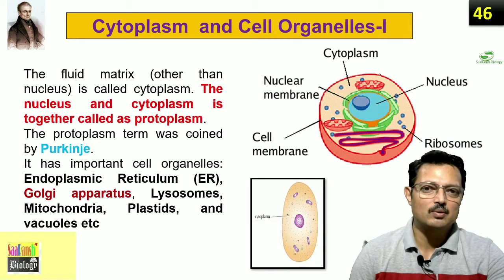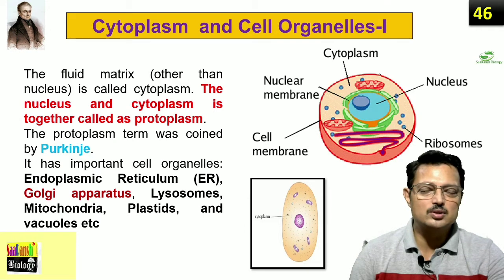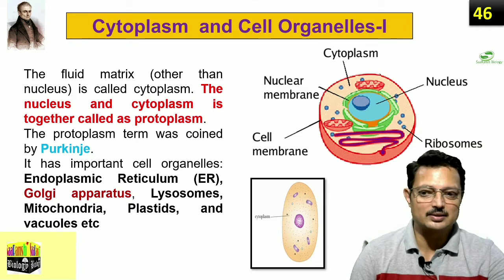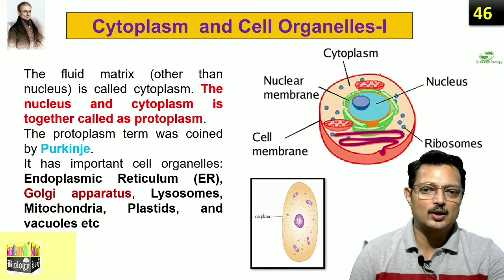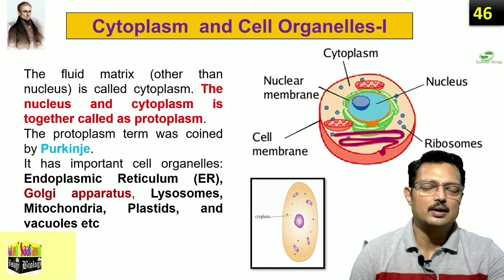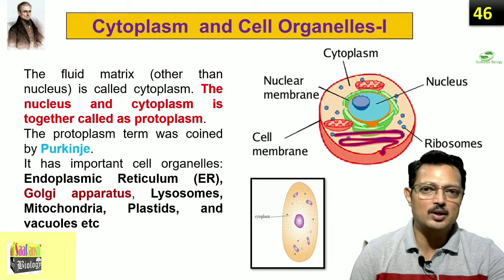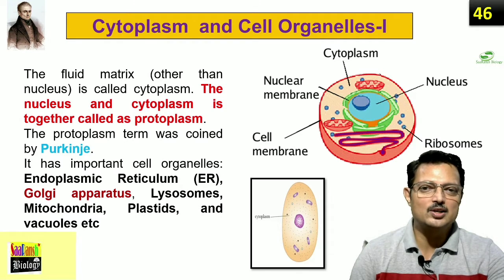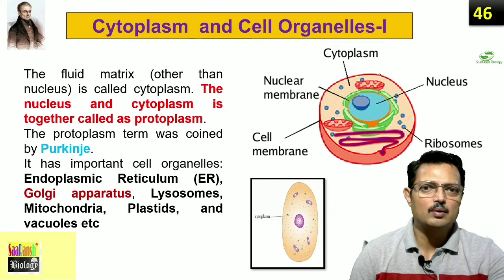The term protoplasm, as we have already seen, was coined by Purkinje. Protoplasm includes cell cytoplasm and the nucleus. The cytoplasm holds all the important cell organelles, including membrane-bound organelles like endoplasmic reticulum, Golgi apparatus, mitochondria, plastids, vacuoles, and also some inclusions like ribosomes, microfibrils, and other components. It is also a storehouse of nutrients, containing molecules like proteins, starch granules, and other chemicals.